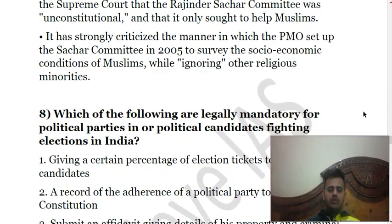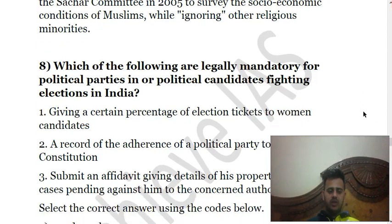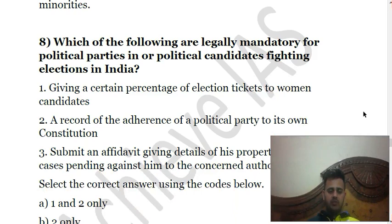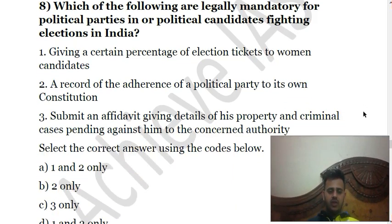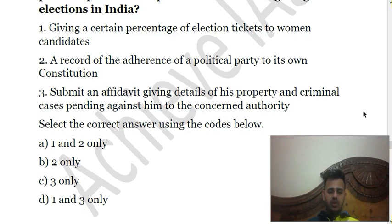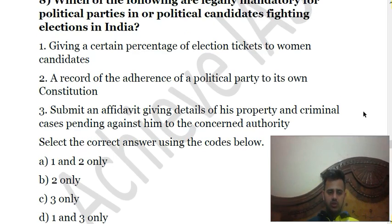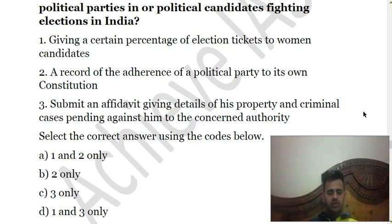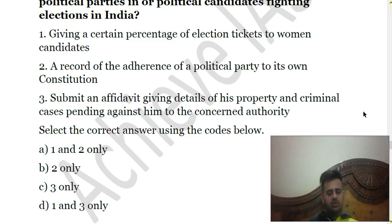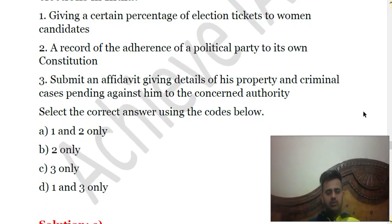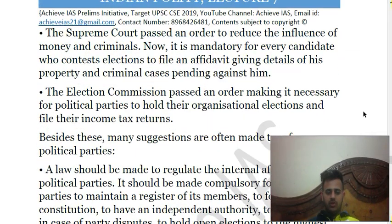The eighth question asks: which of the following are legally mandatory for political parties or candidates fighting elections in India? First, giving a certain percentage of election tickets to women candidates. Second, a record of adherence of a political party to its own constitution. Third, submitting an affidavit giving details of property and criminal cases pending against the candidate to the concerned authority. Only the third statement is legally mandatory — the candidate must submit an affidavit with details of property and pending criminal cases. The answer is C — third only.